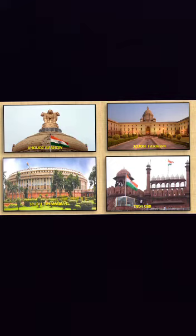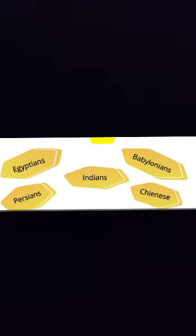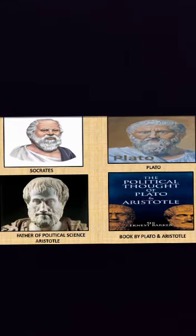The main subject matter of political science is the study of the state. The study of political science as a subject began with the Greeks. Though Egyptians, Babylonians, Persians, Indians and Chinese mentioned their ideas about politics much earlier than Greeks, they failed to develop it as a systematic study. Socrates, Plato and Aristotle were the famous Greek philosophers and political thinkers. Politics was given the status of an independent science by the Greeks.